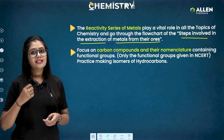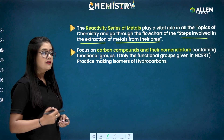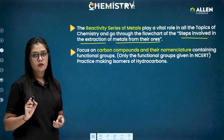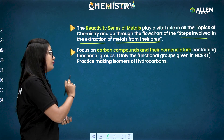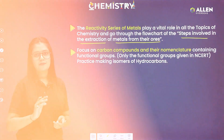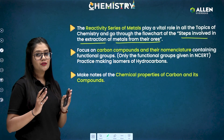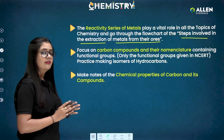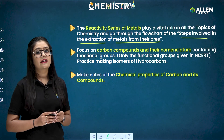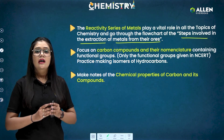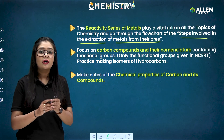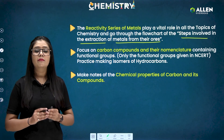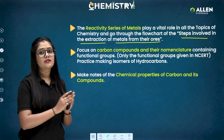Focus on carbon compounds and their nomenclature containing functional groups — just the functional groups given in the NCERT book. Practice making isomers of hydrocarbons as well. Make short notes for the chemical properties of ethanol, ethanoic acid, and reactions like oxidation, addition, and substitution. This is the topic where most students face difficulty, so revise by making separate notes for this topic.